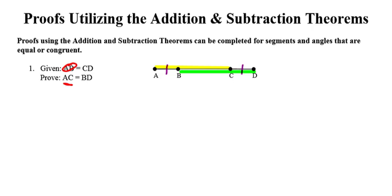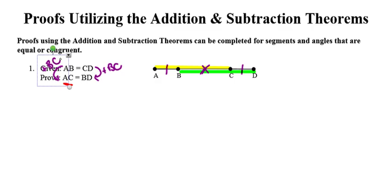In order to use the addition theorem, we have to have two pieces to add together. In this case, we're only given one set of pieces — AB is equal to CD. If I'm starting with the short segment AB and want to end up with segment AC, the piece I add is BC. Likewise on the right side, starting with CD and ending at segment BD, I add BC — a shared piece in the middle. By the reflexive property, BC is equal to BC.